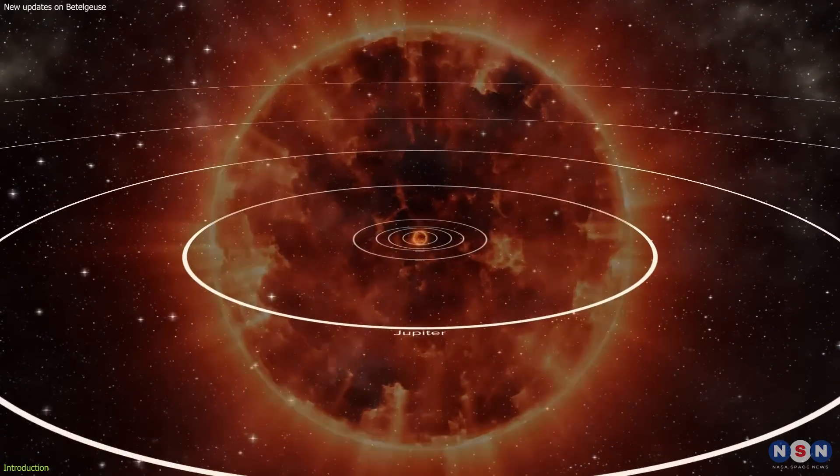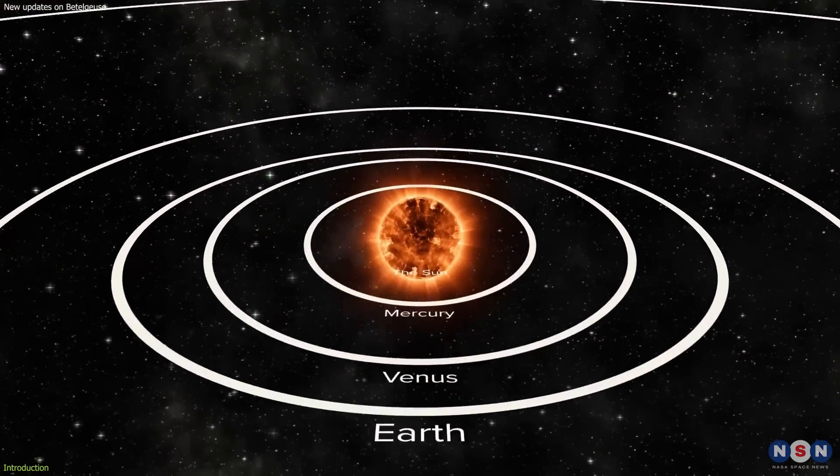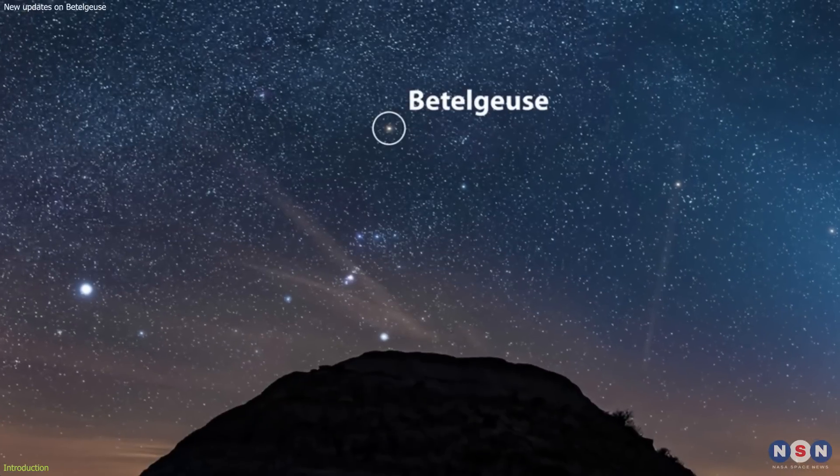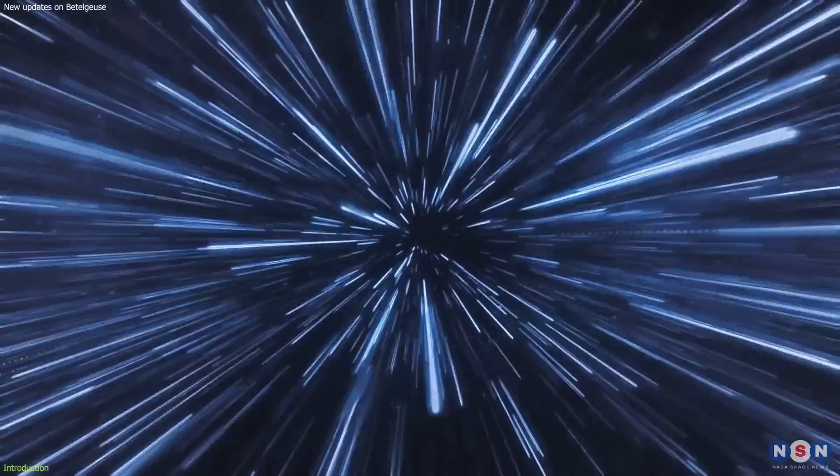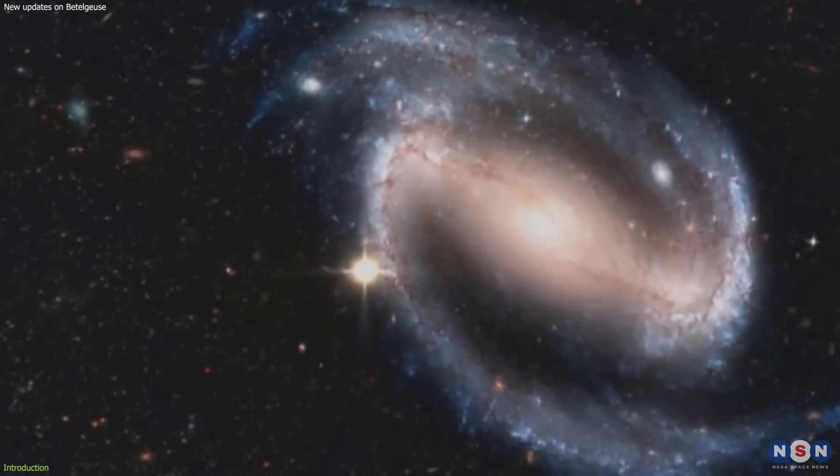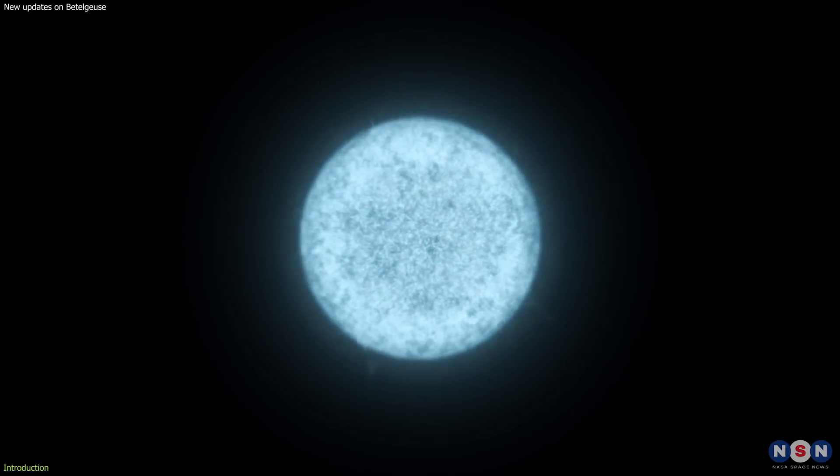Betelgeuse is a massive star, about 20 times the mass and 900 times the radius of our sun. It is also one of the closest supergiants to Earth, only about 700 light-years away. It is a variable star, which means that it changes in brightness due to pulsations and dust ejections.